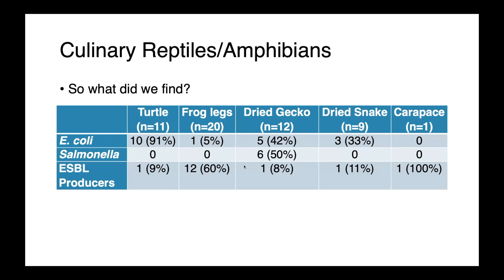So what did we find? E. coli was not surprisingly very common in our turtles — 91% of them were positive. We found many ESBL producers. Frog legs — about 60% of those samples yielded an ESBL producer. Dried geckos were a common source of E. coli and Salmonella. We aren't able to say whether the Salmonella originated where the product was initially produced or whether it was contaminated at the point of sale, perhaps by flies landing on it.